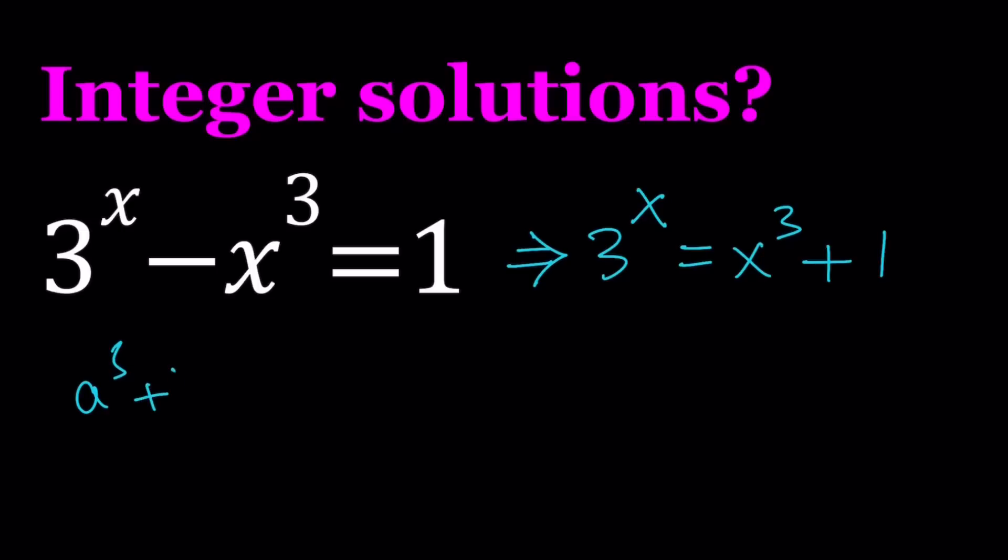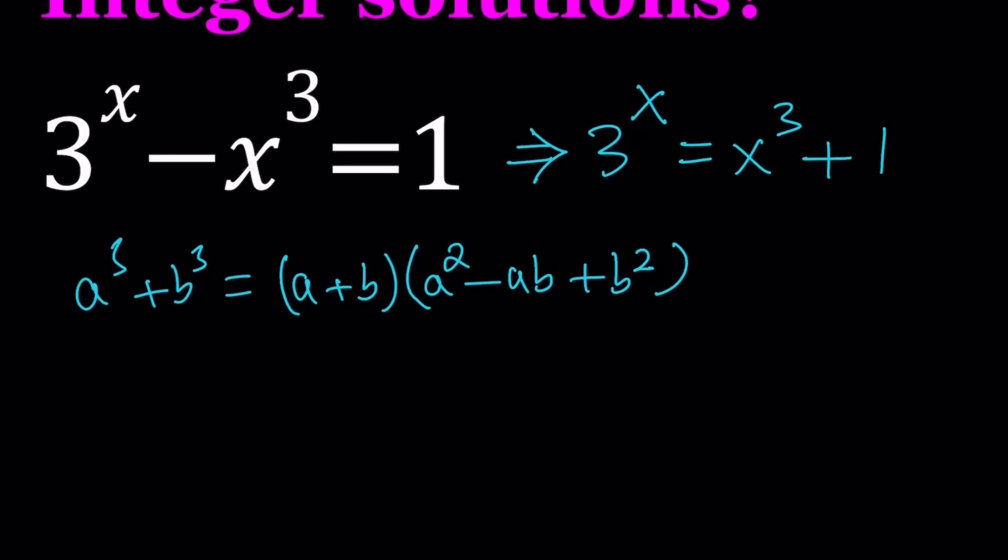Remember, a cubed plus b cubed can be written as a plus b multiplied by a squared minus ab plus b squared. So, we have a factorable expression, and we have the 3 to the power x on the left-hand side. You could definitely use modular arithmetic arguments here. What happens if we work mod 2 or mod 3 and so on. That will narrow down the solutions.